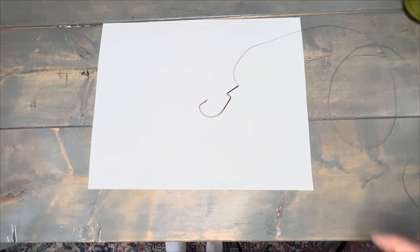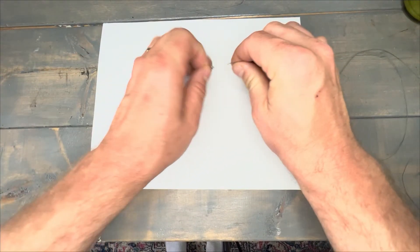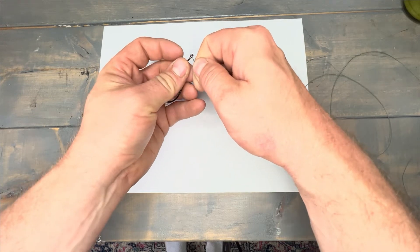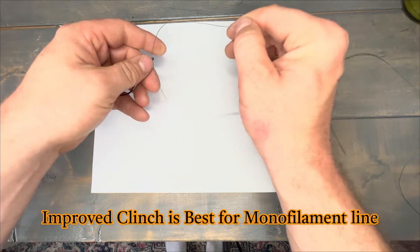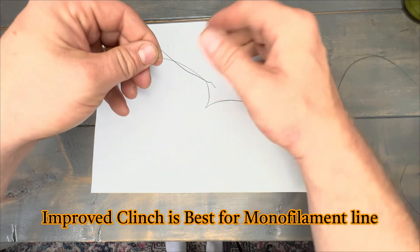All right, so we want to tie just a regular fishing knot. This is what we call an improved clinch knot, probably the most common among fishermen.